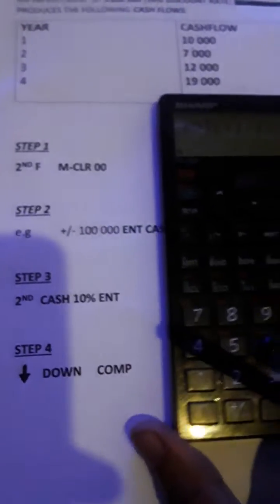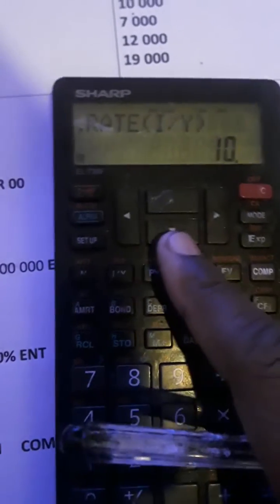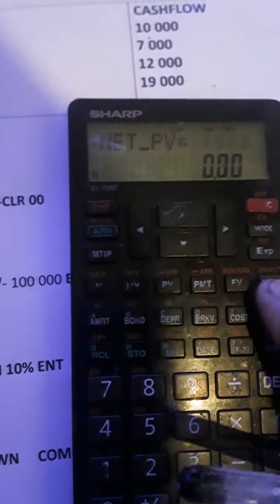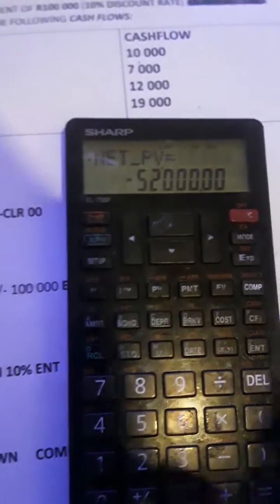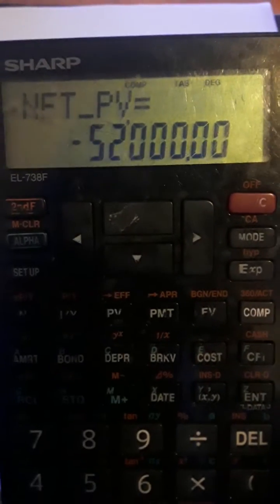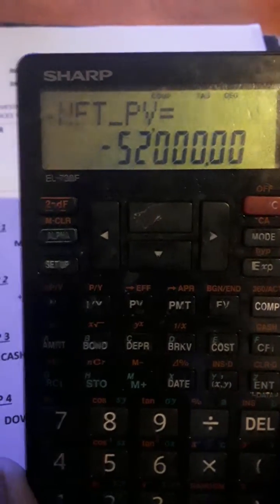Now step four, we just press the down button, then compute. This is the down button, and then we're going to compute. Right. So as you can see, our net present value is a negative.